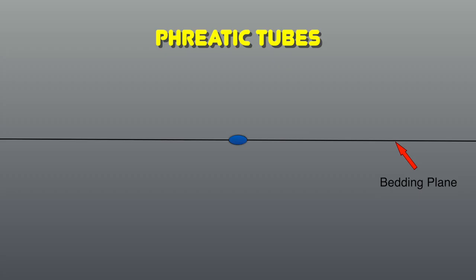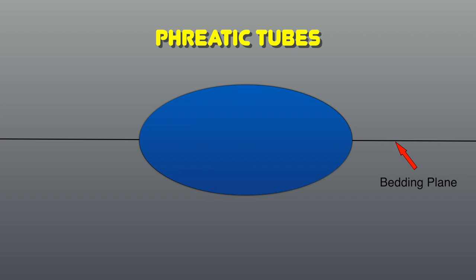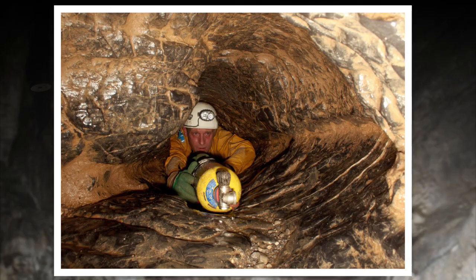Phreatic tubes are cave passages formed completely underwater. As they are completely submerged passages, the cave walls are dissolved uniformly in all directions, forming a tube. This rather cosy phreatic tube is the Long Crawl in Dan yr Ogof, a cave in South Wales, and this is the bedding plane around which the cave passage formed.